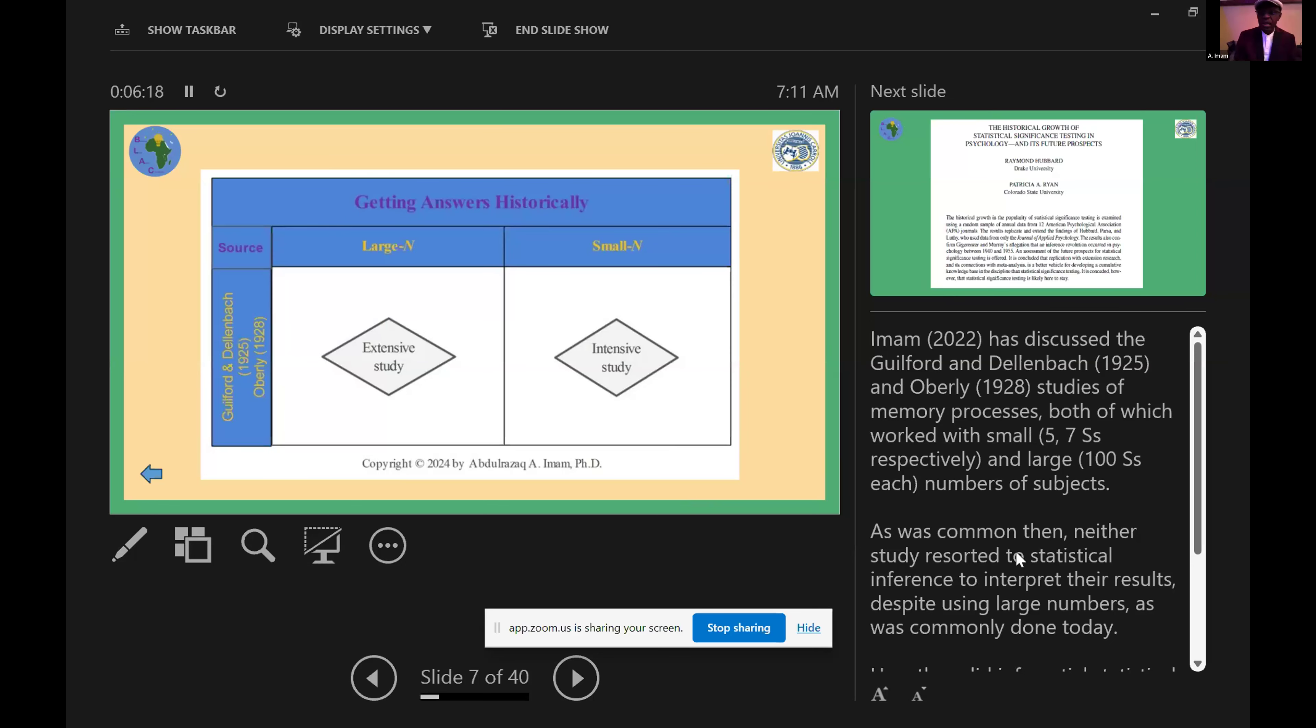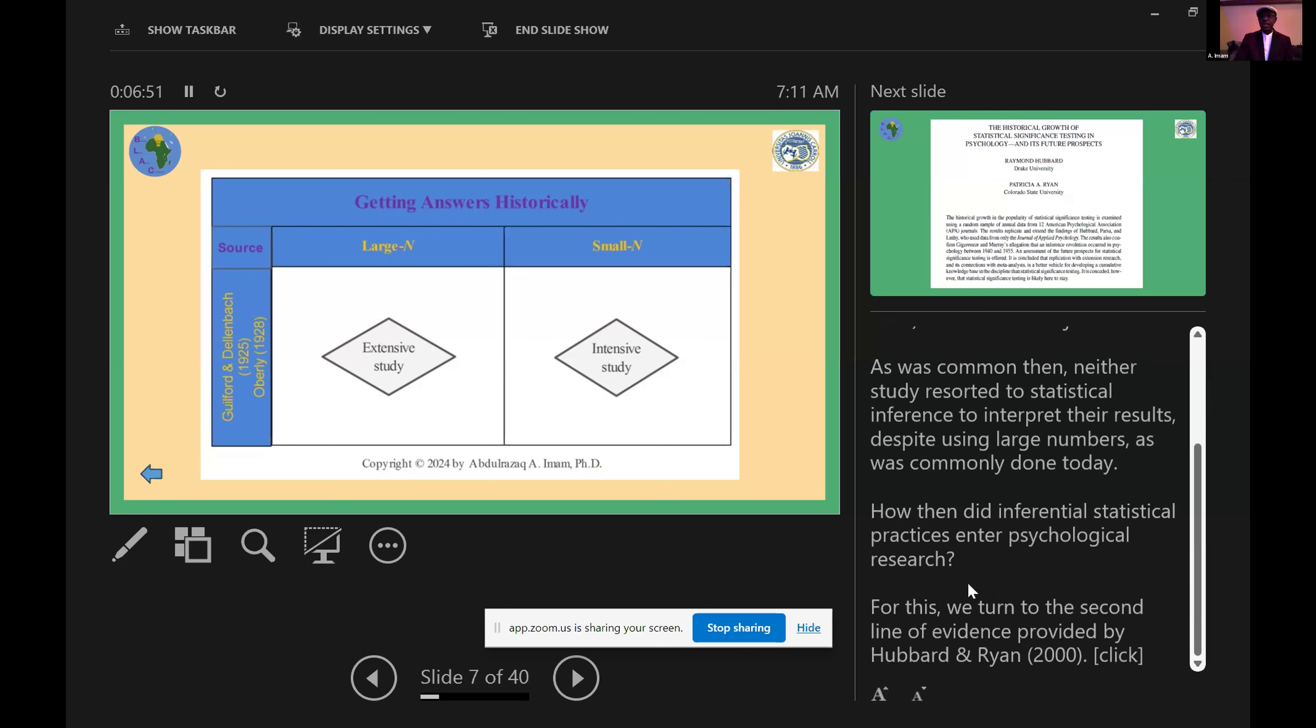In the study of memory processes I extensively discussed the work of Guilford and Dallenbach and Oberle, both of whom studied a few number of subjects in what they described as intensive studies and large numbers, about 100 subjects, in what they called extensive studies. What is notable about them is that they did not use inferential statistics to analyze their data despite using large numbers.